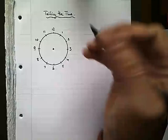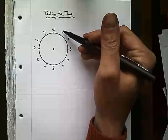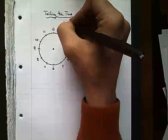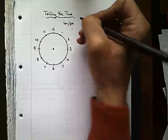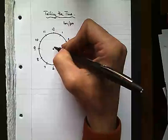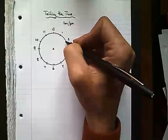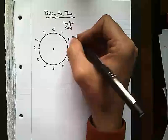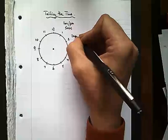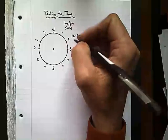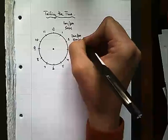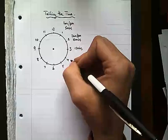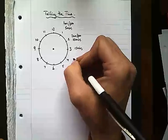Let's start with how numbers on the clock can represent either hours or minutes. The one can represent one a.m. or one p.m. for hours, but if the big hand is pointing to it, it represents five minutes. The two represents two a.m. or p.m., but also ten minutes. The three represents three a.m. or p.m., but also fifteen minutes. The four represents four a.m. or p.m., but also twenty minutes.